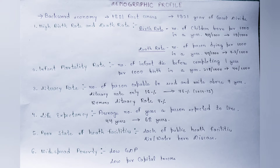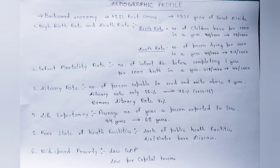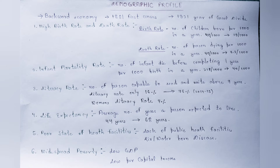India में जो first official census हुआ था वो 1881 में हुआ था, और फिर लगातार उसके बाद हमारा census after 10 year के interval में होता रहता है। लेकिन 1921 को year of great divide और year of demographic transition कहा जाता है — यह बहुत ही important question है और one marks के लिए, क्योंकि यह previous year में भी आ चुका है।